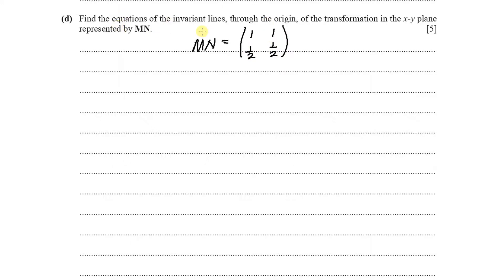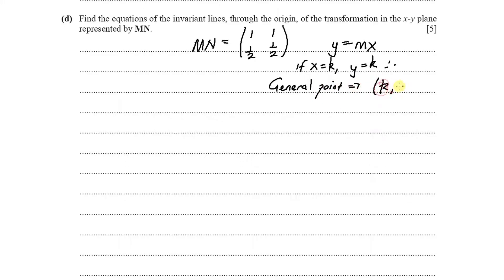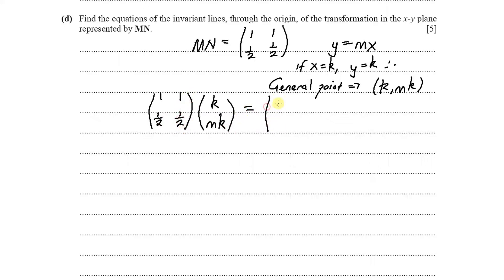The invariant lines through the origin are lines of the form y = mx. If x = k, then y = mk, so the general point on any such line is (k, mk). If we transform this point through matrix MN, which is (1, 1; ½, ½), we get an image point (x', y').